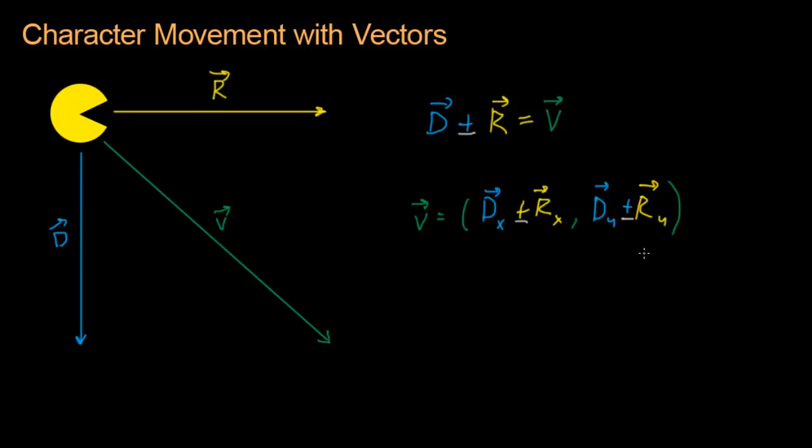So before we move on to see how it works in the code, I want to show you some cool properties of vector addition. In order to add D and R, you can think of it like this. If I take D and stick it on the end of R, just like this, then the endpoint where D ends up will be the result of the added vector. And you can see that V ends right here at this endpoint.